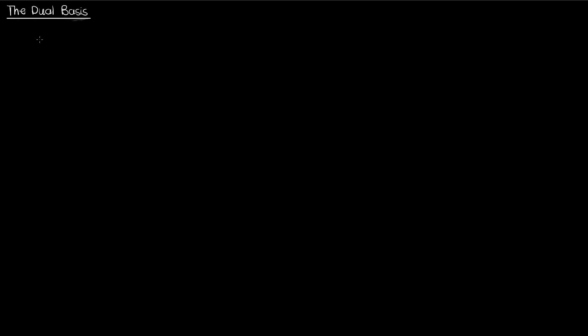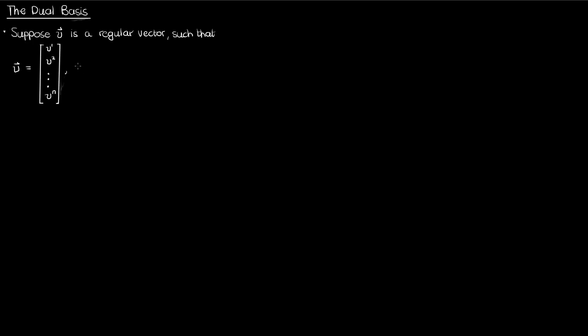In this video we'll talk about the dual basis and define the dual basis vectors. First, let's suppose that I have a regular vector v with components v super 1, v super 2, all the way to v super n, where n is the dimension of the space. I can write my regular vector v as a column vector, or as a linear combination of basis vectors e sub 1, e sub 2, all the way to e sub n, scalar multiplied by the corresponding components v super 1, v super 2, etc. I'll call this equation 1.